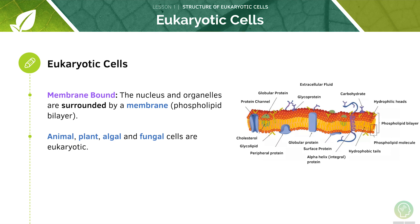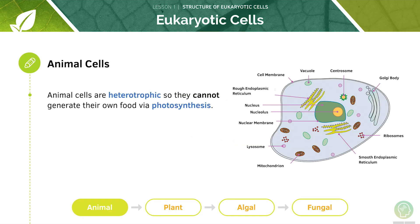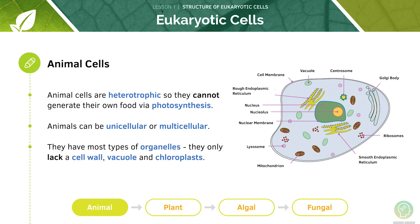Animal, plant, algal and fungal cells are eukaryotic — there are four cell types of eukaryotes. The main distinction between animal cells and plant cells is that animals are heterotrophs, meaning that they cannot generate their own food via photosynthesis. Animals can be unicellular or multicellular; there are many different types of unicellular animals — in fact, there are almost as many single-celled animals as there are multicellular animals. Animal cells only lack a cell wall, vacuole and chloroplasts compared to plant cells.